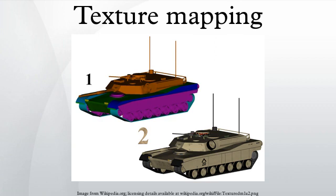Instead of interpolating the texture coordinates directly, the coordinates are divided by their depth, and the reciprocal of the depth value is also interpolated and used to recover the perspective correct coordinate. This correction makes it so that in parts of the polygon closer to the viewer the difference from pixel to pixel between texture coordinates is smaller, and in parts farther away this difference is larger. Affine texture mapping directly interpolates a texture coordinate between two endpoints, whereas perspective correct mapping interpolates after dividing by depth, then uses the interpolated reciprocal to recover the correct coordinate. All modern 3D graphics hardware implements perspective correct texturing.